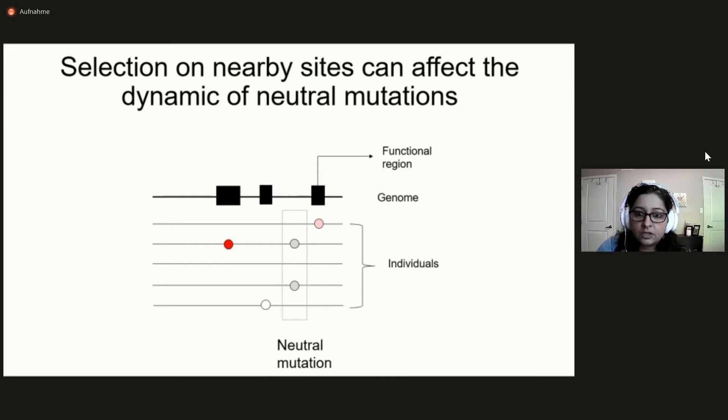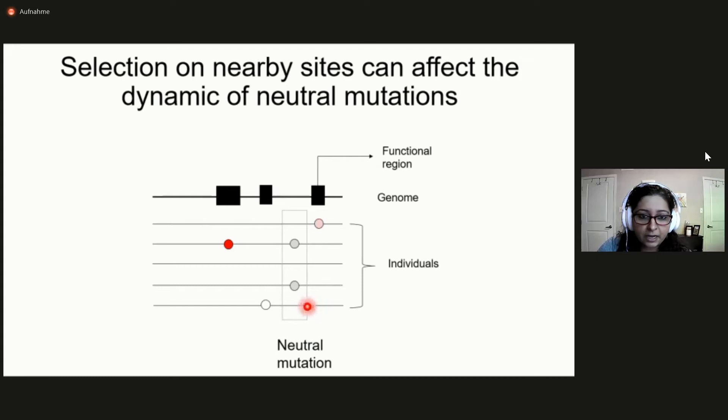For instance, we can infer parameters defining past population size changes. Most present methods assume that all sites evolve independently. However, because functional and non-functional sites are linked to each other on a chromosome, selection acting on a few sites can really affect the dynamics of nearby neutral mutations in the population.